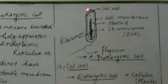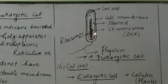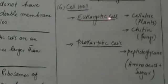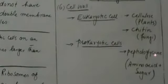A prokaryotic cell has a cell wall, cell membrane, plasma, and chromosomes, along with ribosomes. The ribosomes of eukaryotic cells are larger. Regarding cell walls: in plant cells they are made of cellulose, in fungi they are made of chitin, and in prokaryotic cells the cell wall is made of peptidoglycan — which is made up of amino acids and sugar.